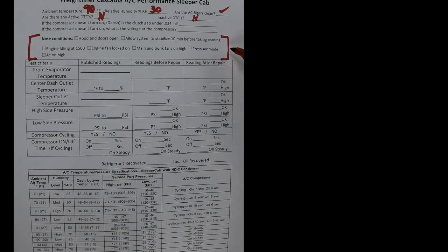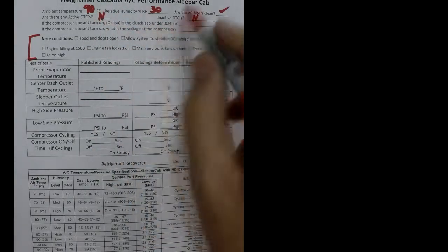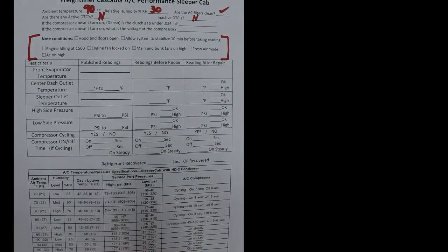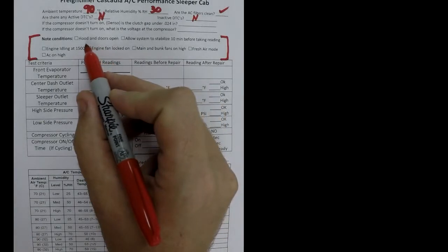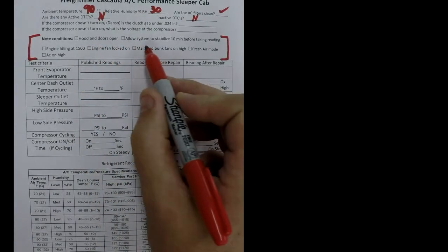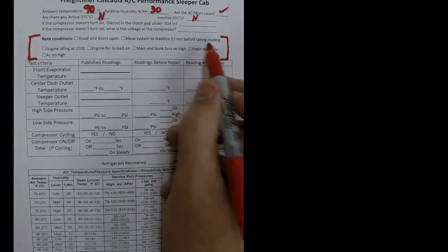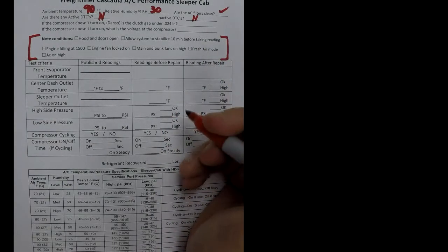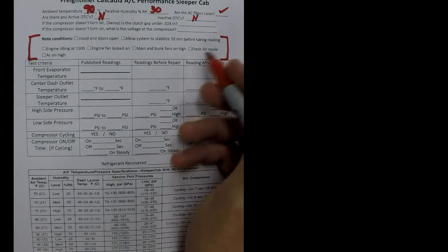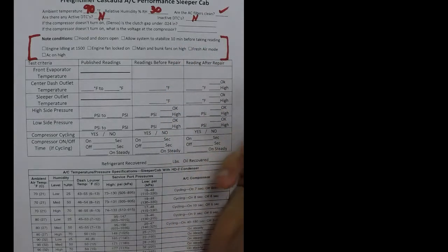The most important part of the sheet is right here, the conditions. Freightliner says that if you do all this, it's this temperature, this is what we should get out of it. So you have to have the hood and the doors open. Allow the system to stabilize for 10 minutes. Usually if the clutch starts cycling in five minutes, then I can start taking my readings. 10 minutes is just the baseline.